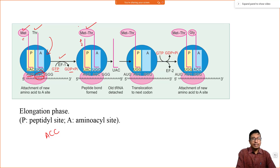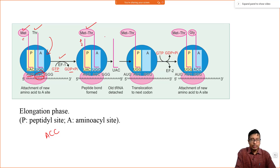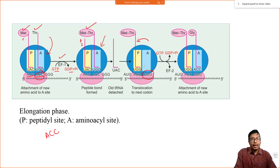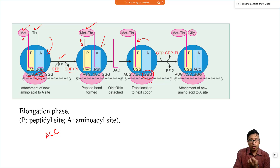The tRNA at the A site, which has just received an additional amino acid from the P site, now gets shifted to the P site. This is the translocation process. Along with that, the whole mRNA assembly moves forward by three places, because the A site now has the job of identifying the next triplet codon. The tRNA which was occupying the A site goes to the P site — this is the whole translocation process.